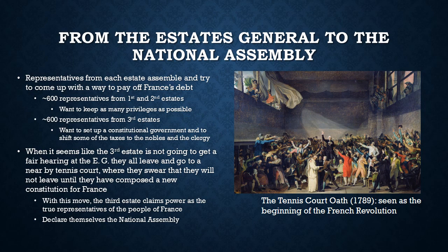It seemed at first like this was going to work out, but there were a couple of sneaky rules in effect at the Estates General that seemed like they were going to prevent the third estate — the commoners — from getting a fair hearing. When the commoners realized this, they all stormed out of the Estates General building, marched over to a nearby tennis court, and swore they were not going to leave until they had composed a new constitution for France. With this move, the third estate claimed power as the true representatives of the people of France and gave themselves a new name: the National Assembly.